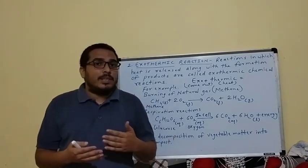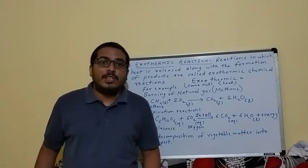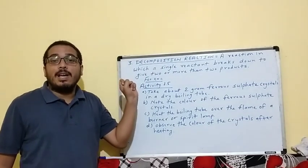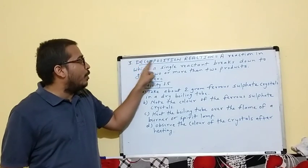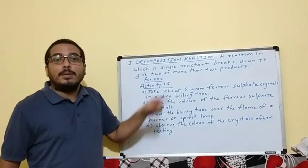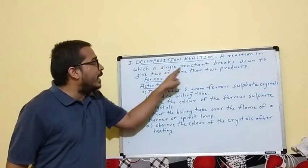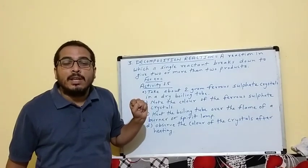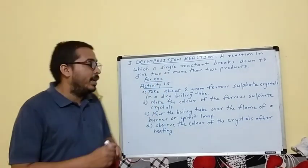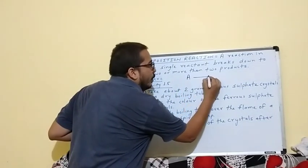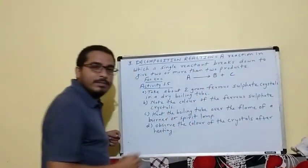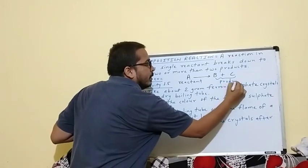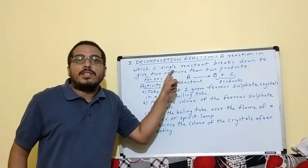Now we go towards our next chemical reaction — decomposition reaction. You can take a screenshot of this content. Our third reaction is decomposition reaction. As the name suggests, decomposition means breakdown. A reaction in which a single reactant breaks down to give two or more products is called a decomposition reaction. The general equation is A → B + C, where A is the single reactant and B and C are the products.